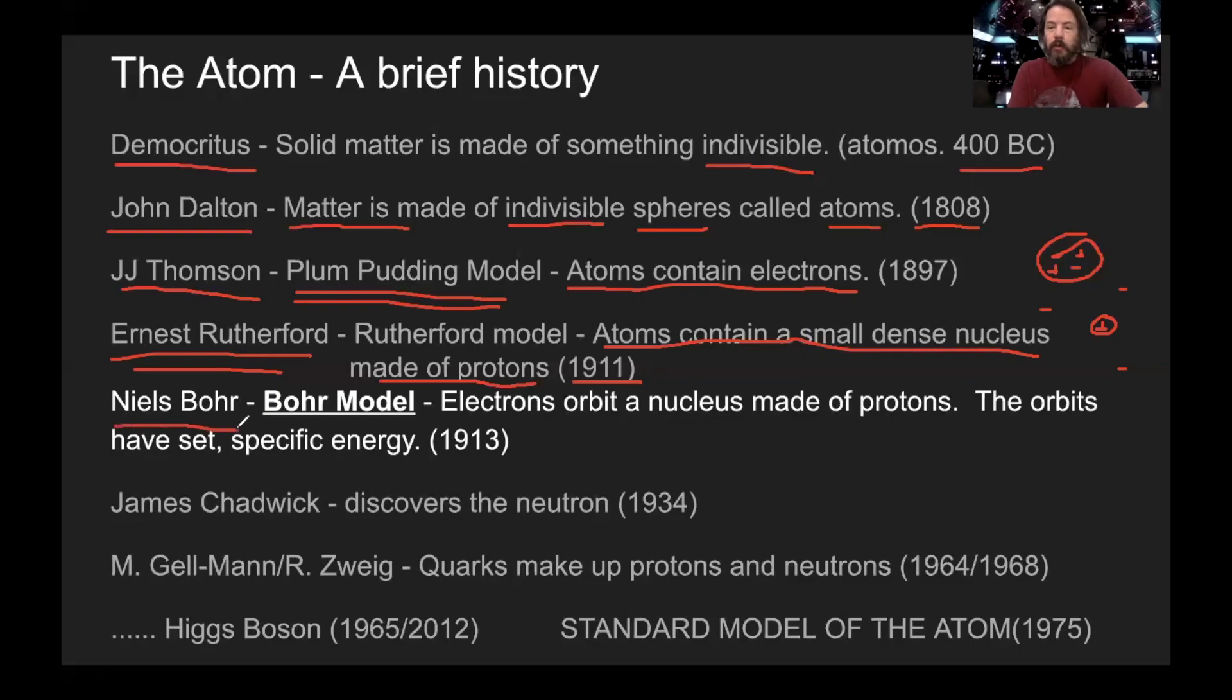Niels Bohr is the model we're going to use. Basically, he said electrons orbit the nucleus made of protons and the orbits have set specific energy. This is probably more than anything else the reason why we use his model. It's also easy to draw. So in general, here's how I would write it. Protons are P positive in the nucleus, and then we have the electron going around the outside. And I write E negative for electron for short.